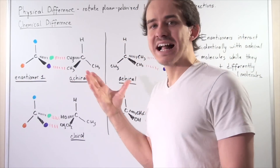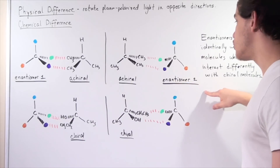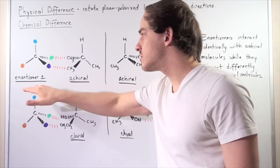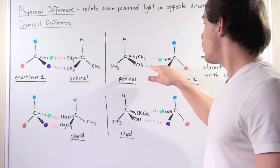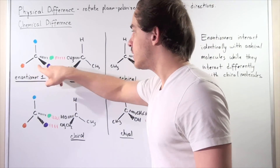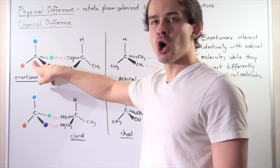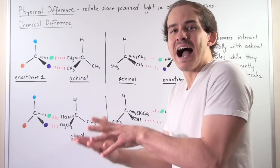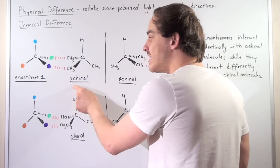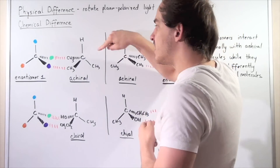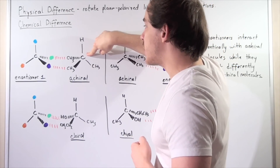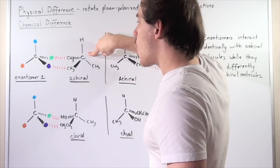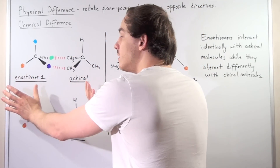Here we have enantiomer 1 and here we have enantiomer 2 — these two molecules are mirror images. Let's say this is the R enantiomer and this is our S enantiomer. Each enantiomer has four different groups attached; this is our stereogenic carbon. Let's examine the interaction of this enantiomer with an achiral molecule — a molecule that is not a chiral carbon, not a stereogenic carbon, with three identical groups attached to this carbon.